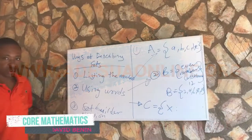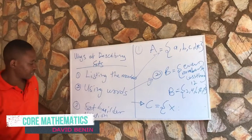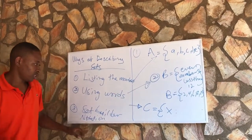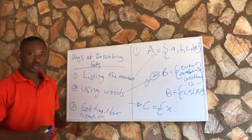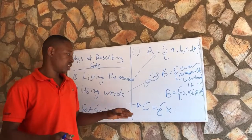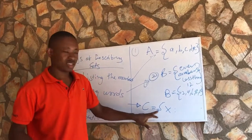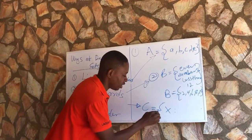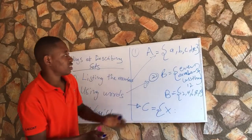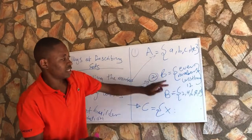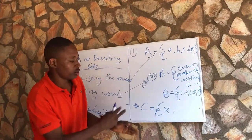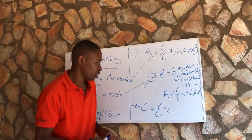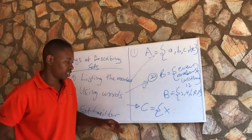The third way of describing sets is by using set builder notation. When we talk of set builder notation, we can say this is a form of mathematical formula. Instead of just writing it by listing the numbers, you can use a mathematical equation to explain or represent it.